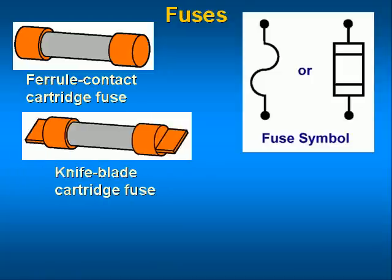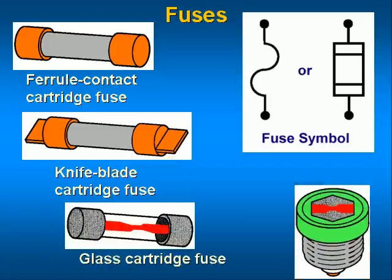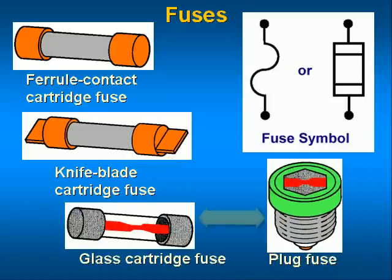There are some fuse types illustrated here. The knife blade connection is used to provide a larger surface area for the electrical connection, so larger current densities can be accommodated. The condition of the fusing element is visible in some fuses, so the fuse condition can be directly observed. Without this feature, measurements must be made.